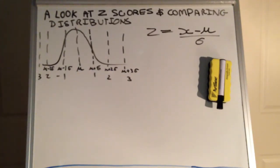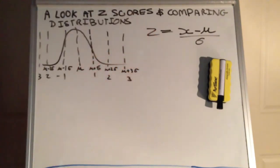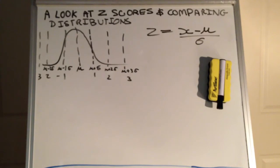You may remember I gave this formula: z equals x take mu over sigma. Today we're going to be looking at how we can use this to compare values on different distributions.